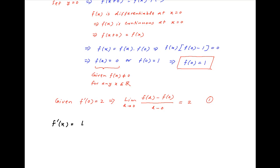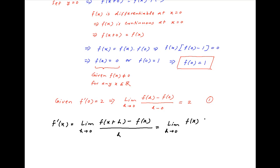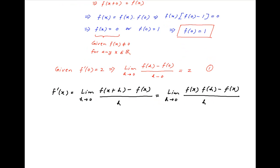f'(x) can be expressed as the limit of [f(x+h) − f(x)] / h as h tends to 0. Using the functional equation, f(x+h) can be written as f(x)·f(h). Therefore f'(x) becomes the limit as h→0 of [f(x)·f(h) − f(x)] / h, which equals the limit as h→0 of f(x)·[f(h) − 1] / h.